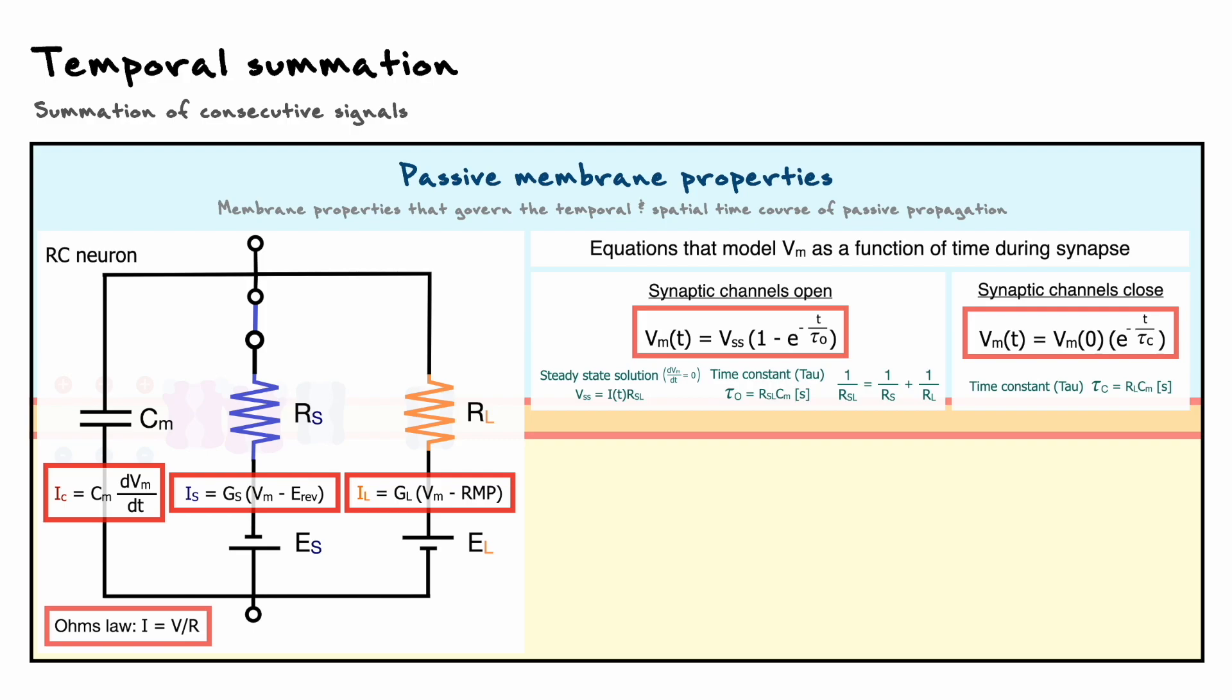Whereas when channels close, it is only the leak resistance that is to be taken into account. Because of this, the growth and decay will have different time constants, and thus different time courses.